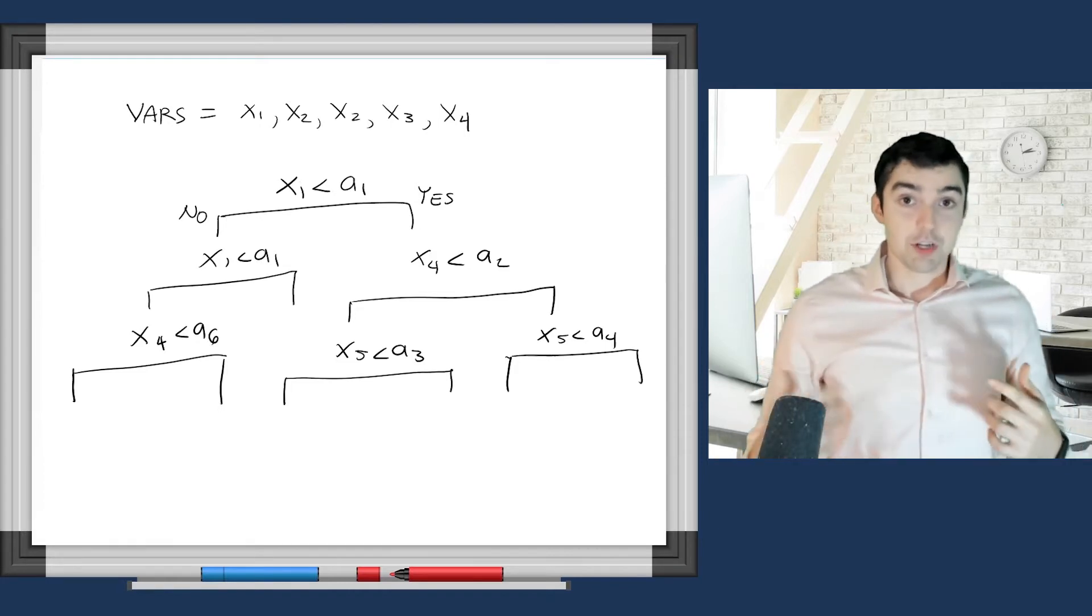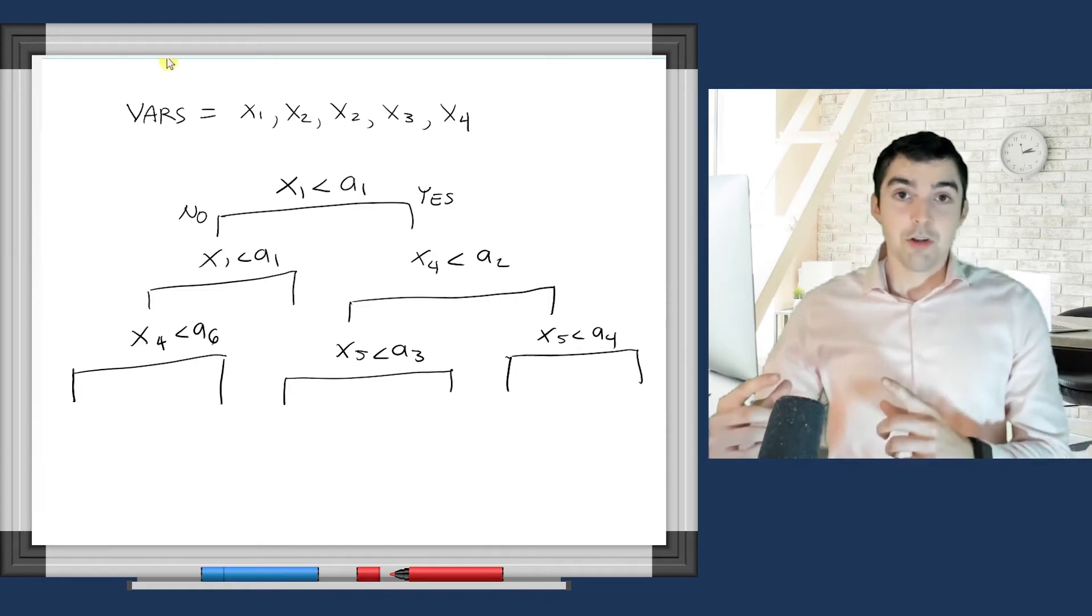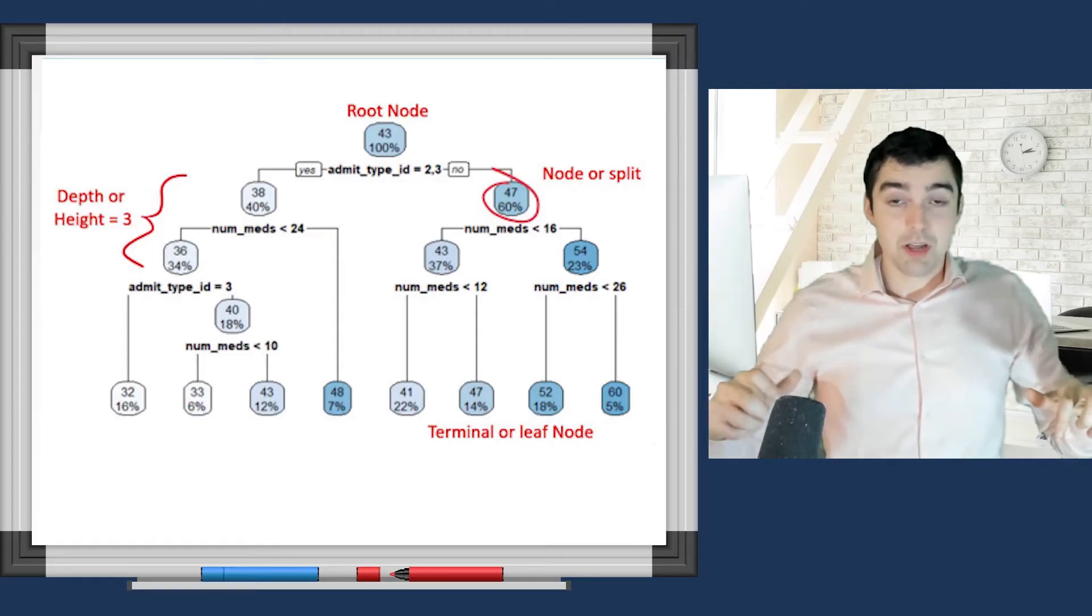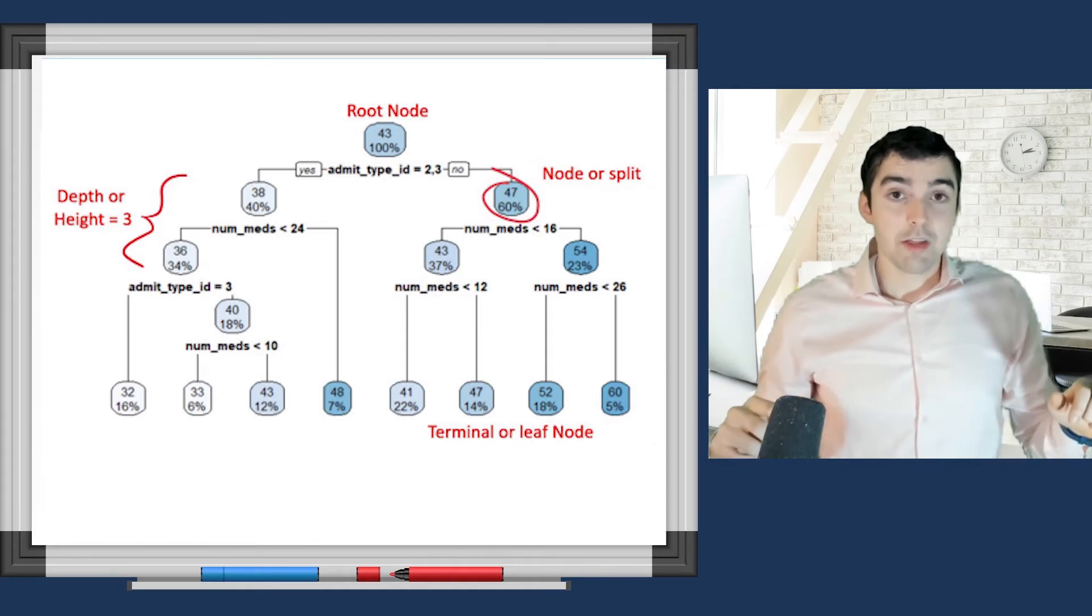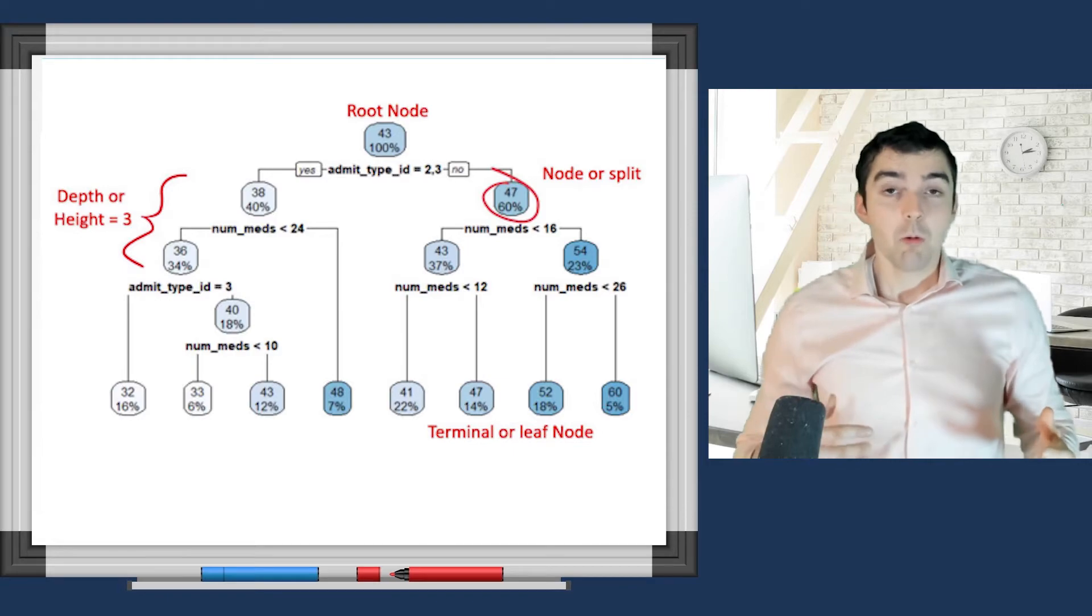Then it's recursive because it will look at each of those new nodes and repeat that process. It will most likely select different variables, but sometimes it could select the same variables. And then once it continues growing more and more branches, it eventually reaches a stopping point. We call these the leaf nodes or the terminal nodes.